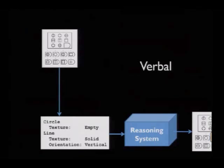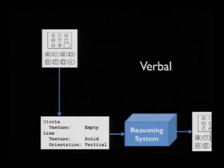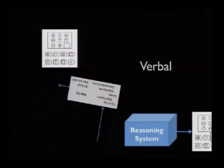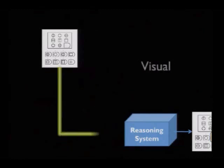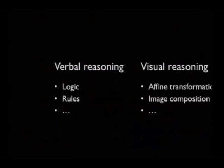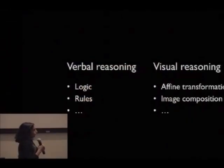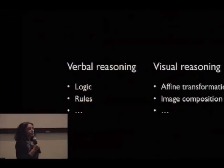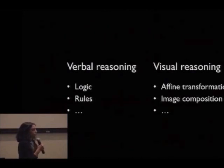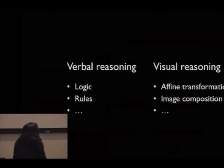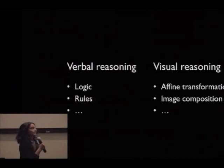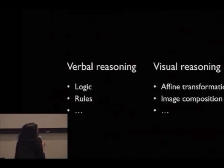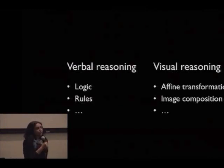In our lab, we have been looking at a different type of strategy for solving this kind of test — can we throw away that verbal conversion completely and reason directly on the visual inputs from the test? In verbal reasoning, there are well-studied techniques like logical operations or rule-based systems. But visual reasoning also has standard mechanisms for manipulating images that we can draw upon.